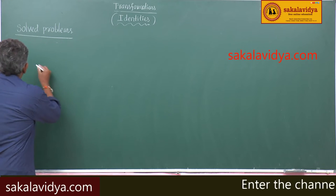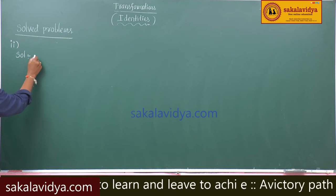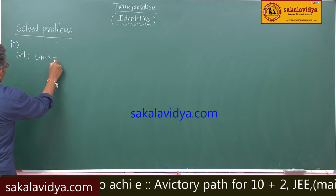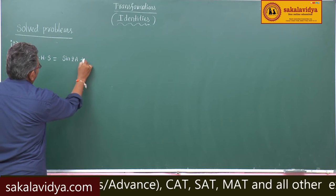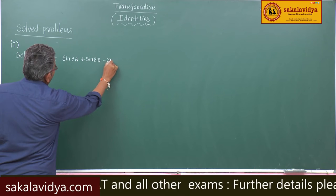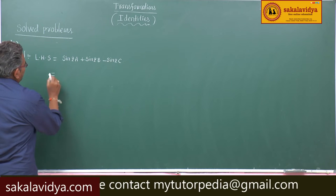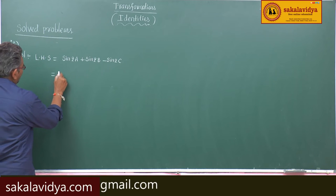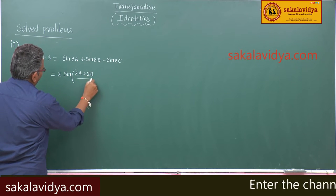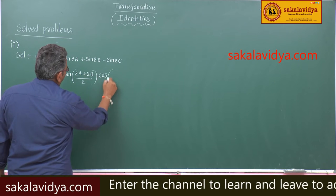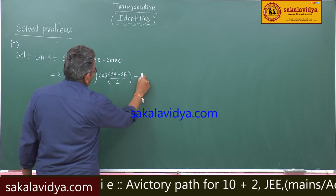Second problem: take the left hand side, sin2a + sin2b - sin2c. Again applying the sin C plus sin D formula, we can write sin2a + sin2b as 2·sin((2a+2b)/2)·cos((2a-2b)/2), and minus sin2c is written as minus 2·sin(c)·cos(c).